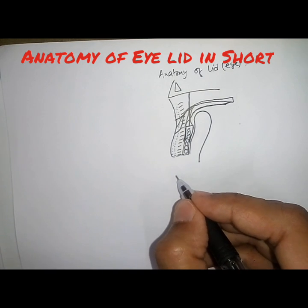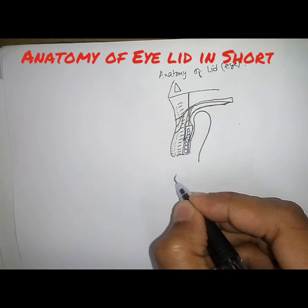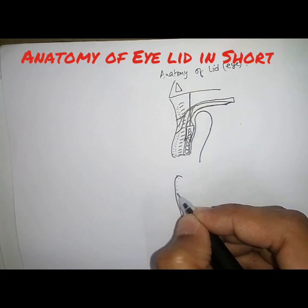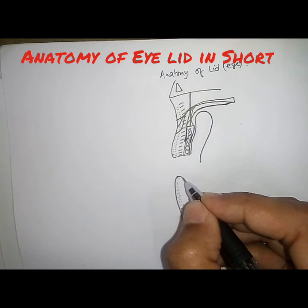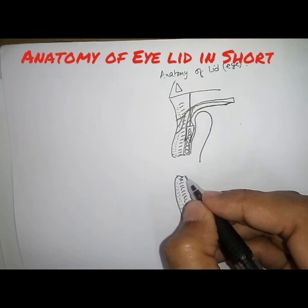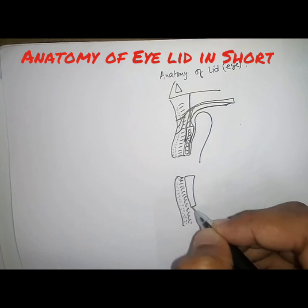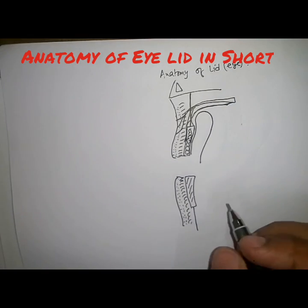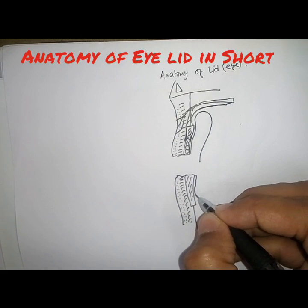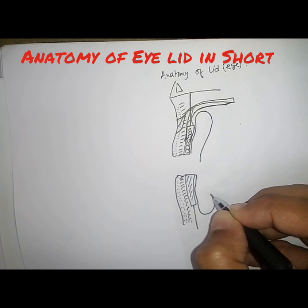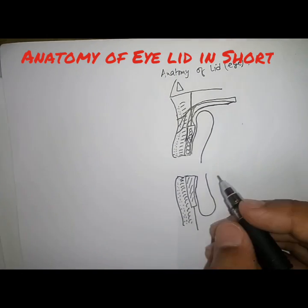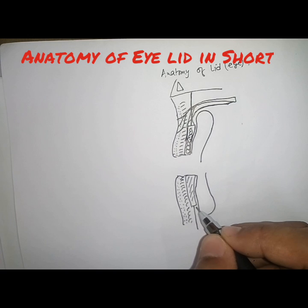In the case of the lower eyelid, similar layers are present: the skin, then the orbicularis muscle, then the submucosal layer, and also a fibrous tarsal plate connected to the septum. Behind the tarsal plate there is the palpebral conjunctiva, which becomes the lower fornix, then continues as the bulbar conjunctiva up to the limbus. There are also some retractors in the lower eyelid.